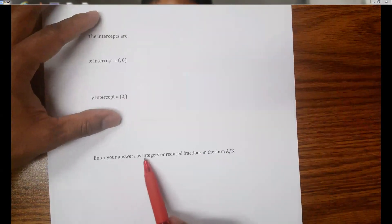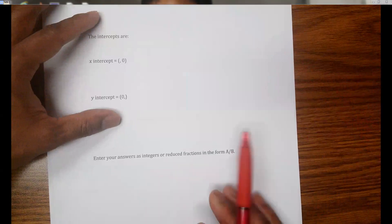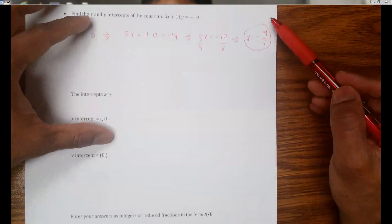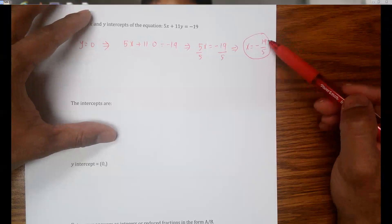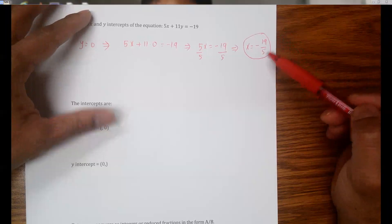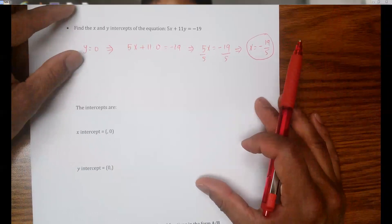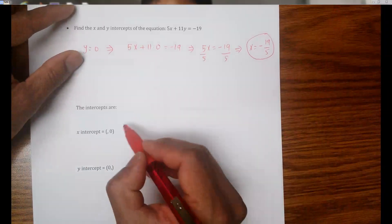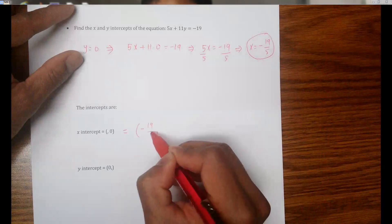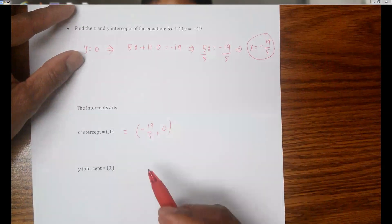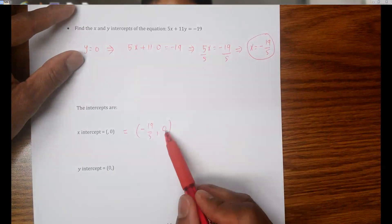If you read the instruction at the end, you can see to enter the answer as an integer or reduced fraction. This is not an integer — 19 over 5 — but there is no common factor between 19 and 5, so it's already in reduced form. So my x-intercept would be negative 19 over 5 and 0. Remember, for the x-intercept the value of y should be 0, that's why we use this notation.